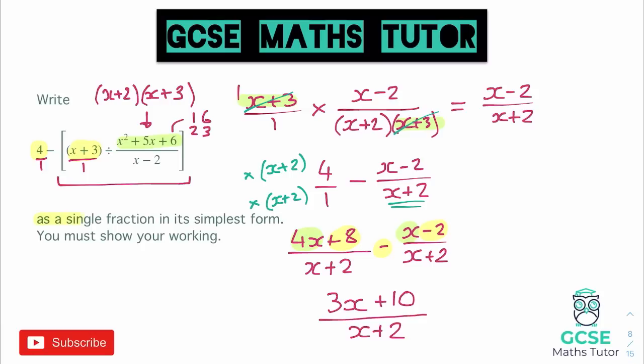Now the question says write it as a fraction in its simplest form and you must show your working. Well clearly we've shown our working. The only way that we could simplify this is if the top factorizes. Now it doesn't factorise. But for example maybe if that 3x would be a 4x and that would mean the top and bottom might simplify because you might be able to factorize. You could definitely factorise 2 out of that and then the bracket might match the x plus 2 on the bottom. Now in this question it doesn't. It doesn't factorise. So that would be our final answer. It would just be 3x plus 10 over x plus 2.